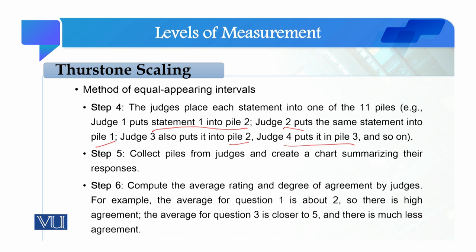After all judges complete the sorting, results are compiled into a summarizing chart. For each statement, you tally how many judges placed it into each of the 11 boxes. For example, for question one, certain numbers of judges placed it in box one; for question three, the value might be five. The chart shows the distribution of judge placements across boxes, such as two, three, four, five, two, three, three, two, across the 11 levels.